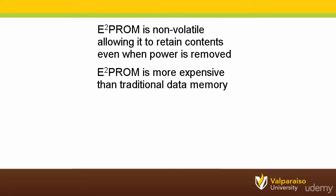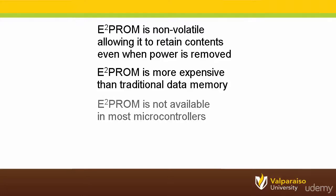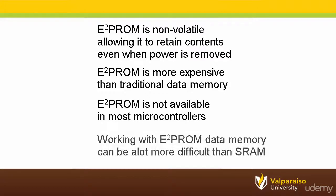Therefore, while a microcontroller may have 32,000 bytes of program memory and 4,000 bytes of SRAM data memory, it may only have 256 bytes of E-squared PROM. Older microcontrollers often did not have any E-squared PROM. Finally, it is often relatively difficult to write or store data to an E-squared PROM data memory, so microcontroller manufacturers have looked for better alternatives for non-volatile data memory.